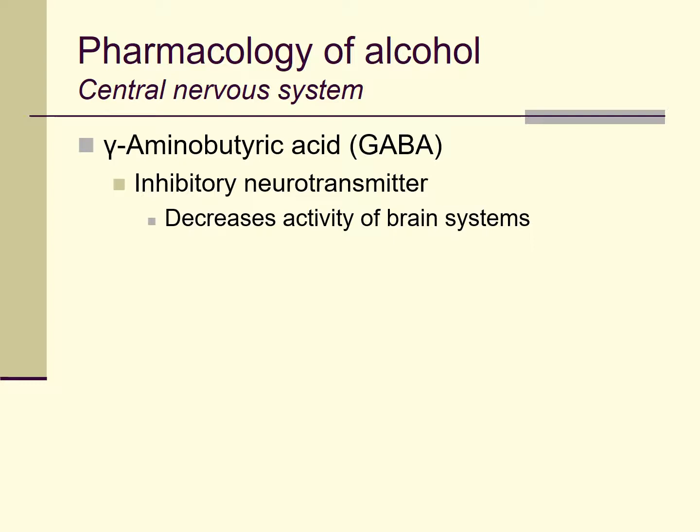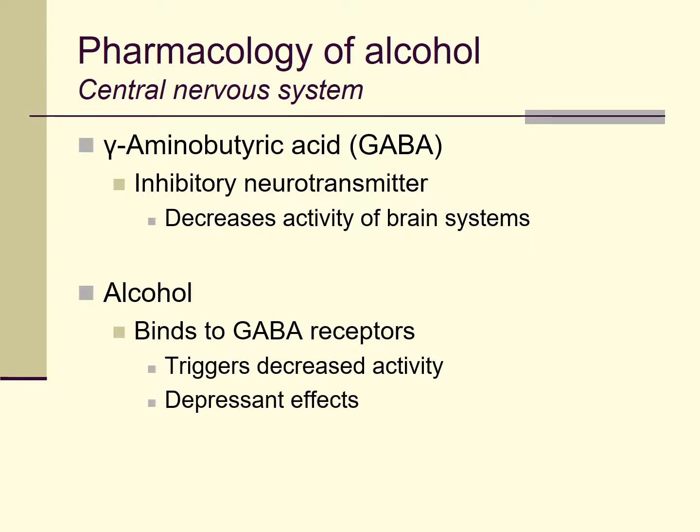In the central nervous system, alcohol affects many different systems in the brain. One neurotransmitter system it influences is the gamma-aminobutyric acid system, or GABA. GABA is generally an inhibitory neurotransmitter — within many subsystems of the central nervous system, the presence of GABA inhibits or decreases activity, acting like a brake to many systems within the brain. Alcohol binds to GABA receptors and triggers them such that they decrease the activity in downstream systems. Part of the reason alcohol acts as a central nervous system depressant is that it's a powerful agonist for GABA receptors in many parts of the CNS, applying the brakes to different parts of your nervous system.